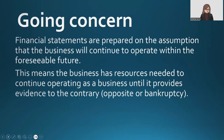Our last one here — Going Concern. Financial statements are prepared on the assumption that the business will continue to operate within the foreseeable future. This means the business has resources needed to continue operating until it provides evidence to the contrary, such as going bankrupt. For instance, if a company plans to keep running for many years, it will record expenses like the purchase of a long-term asset such as buildings spread out over several years, and it will also depreciate assets like equipment or vehicles over a long time. This is because the company expects to use these assets throughout the useful life of the ongoing operation — so here we think of depreciation.